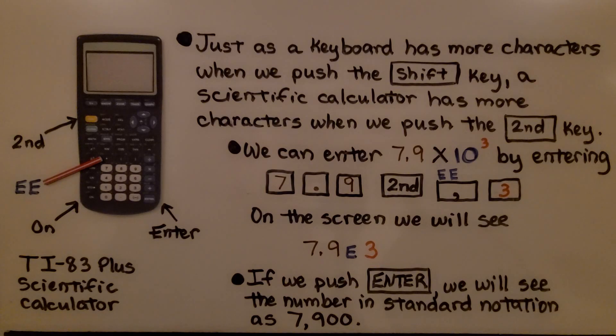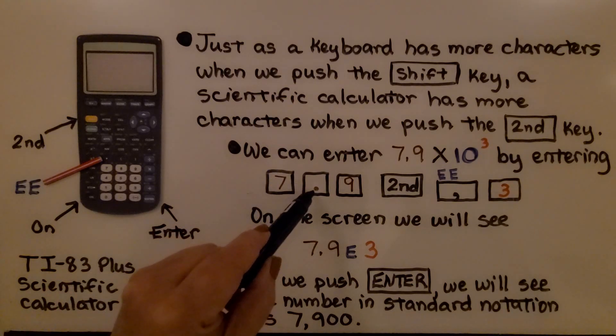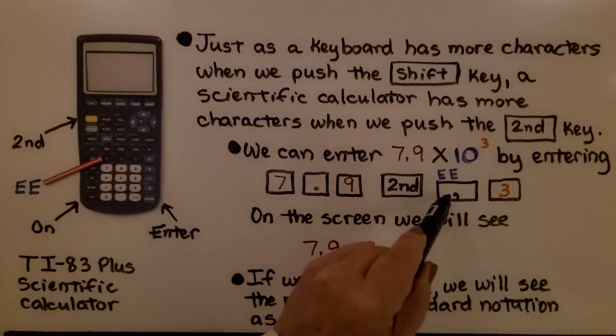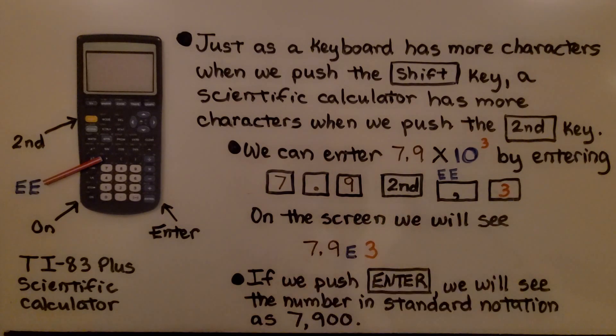Just as a keyboard has more characters when we push the shift key, a scientific calculator has more characters when we push the second key. We can enter 7.9 times 10 raised to the 3rd power by entering 7.9, hitting the second key, then above this comma key, you'll see this capital EE. We hit this, then we hit 3.